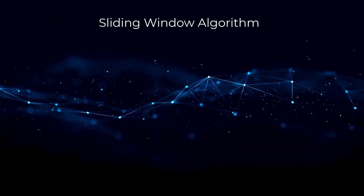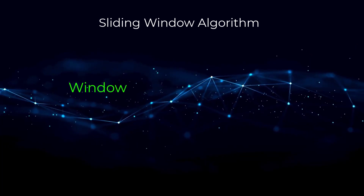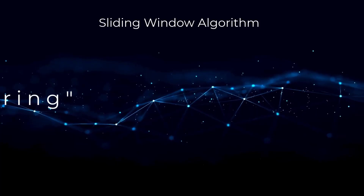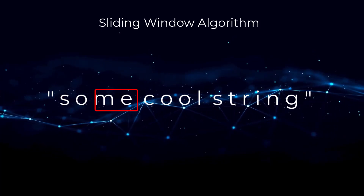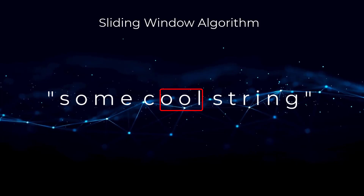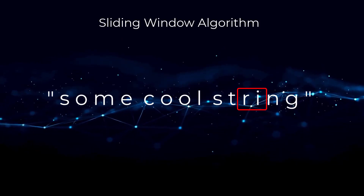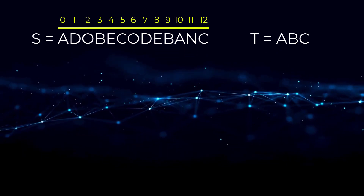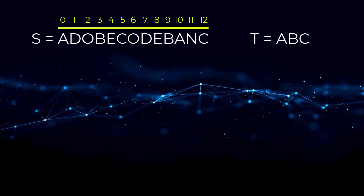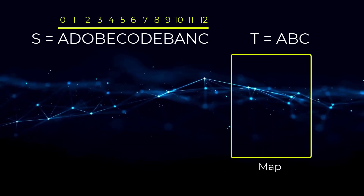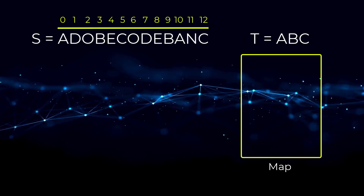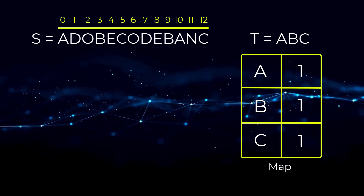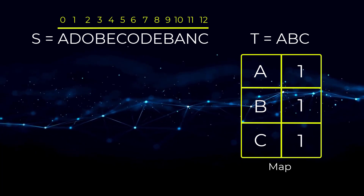A sliding window algorithm is really just a window or section formed over parts of your data — in our case, a string. We move this window in increments to perform some computation, which in our case is finding the minimum window substring. Going back to the example, let's do a step-by-step walkthrough of the algorithm.